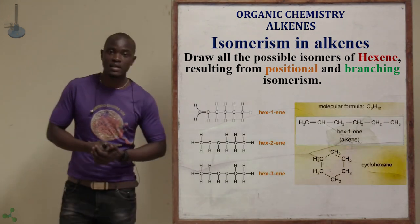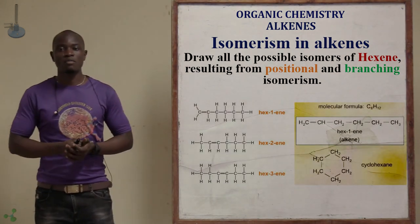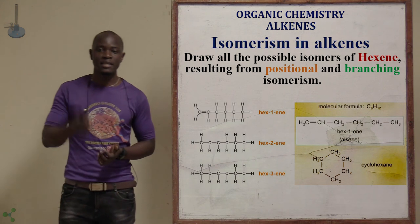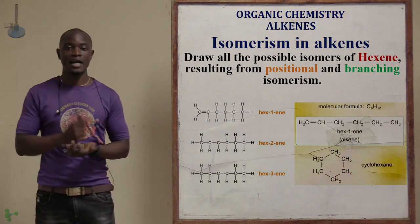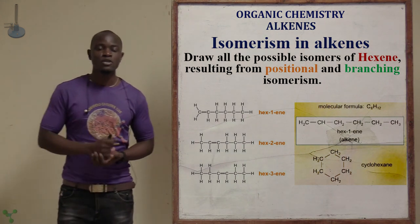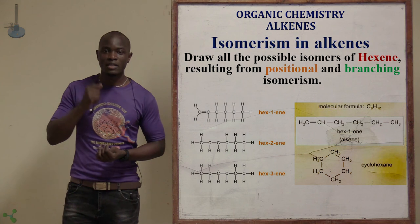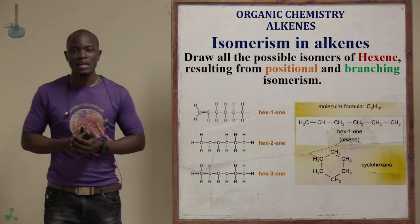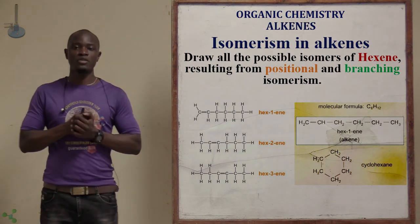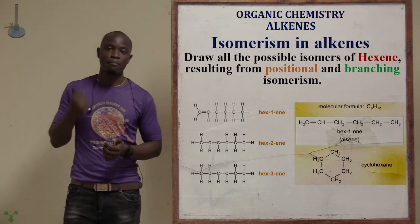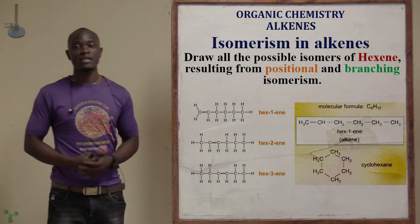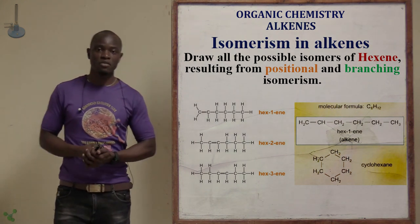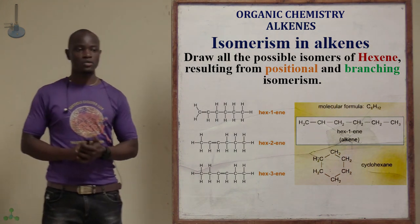A sample question: draw all possible isomers of hex-1-ene resulting from positional and branching isomerism. The examples shown include both positional and branching isomers with many possible components.